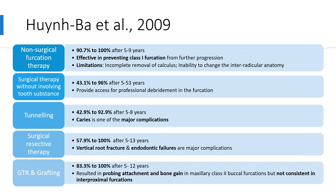Teeth treated with non-surgical furcation therapy were most effective in treating class 1 furcations, but limited by incomplete removal of calculus and inability to change interradicular anatomy. Access flaps or open flap debridement provide access for professional debridement in the furcation. In tunneling, caries surfaced as a major complication. Surgical resective therapy presents with major complications such as vertical root fracture and endodontic failures. Guided tissue regeneration and grafting exhibited probing attachment and bone gain in maxillary class 2 buccal furcations, but this was not consistent with interproximal sites.